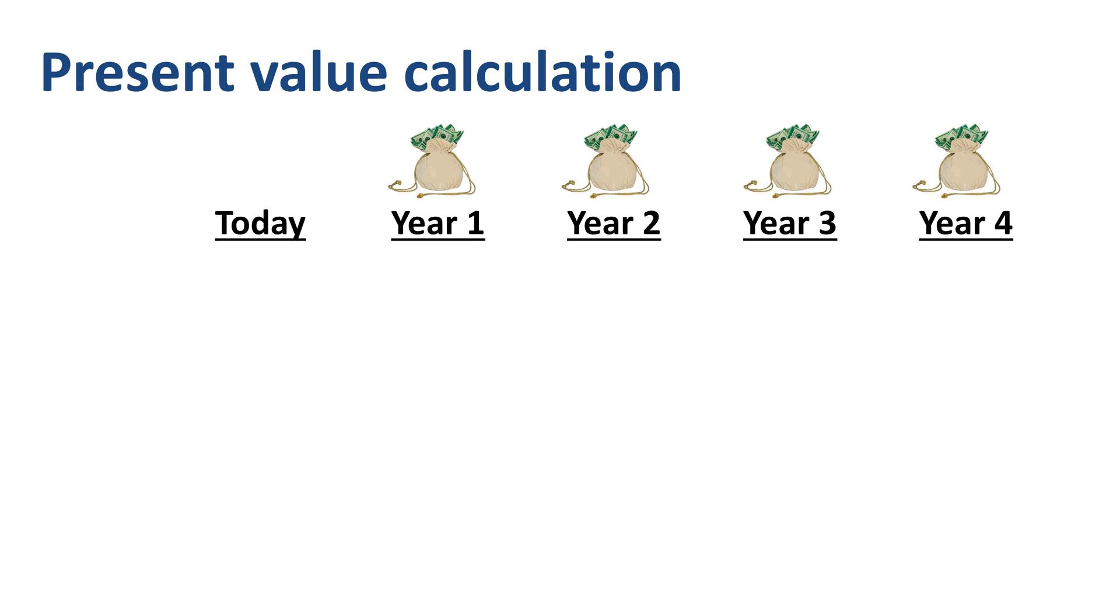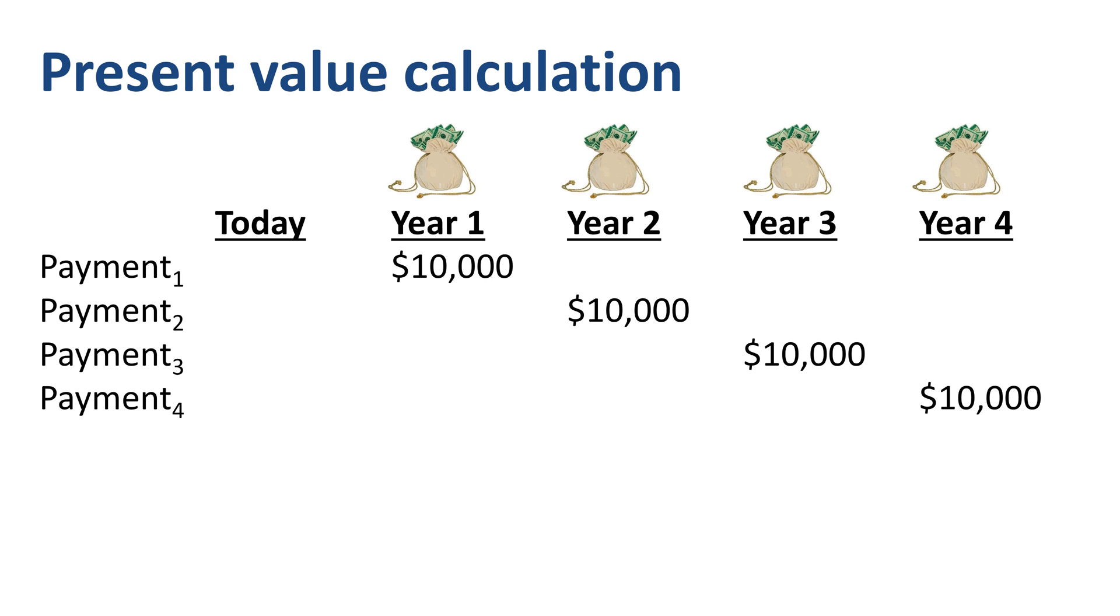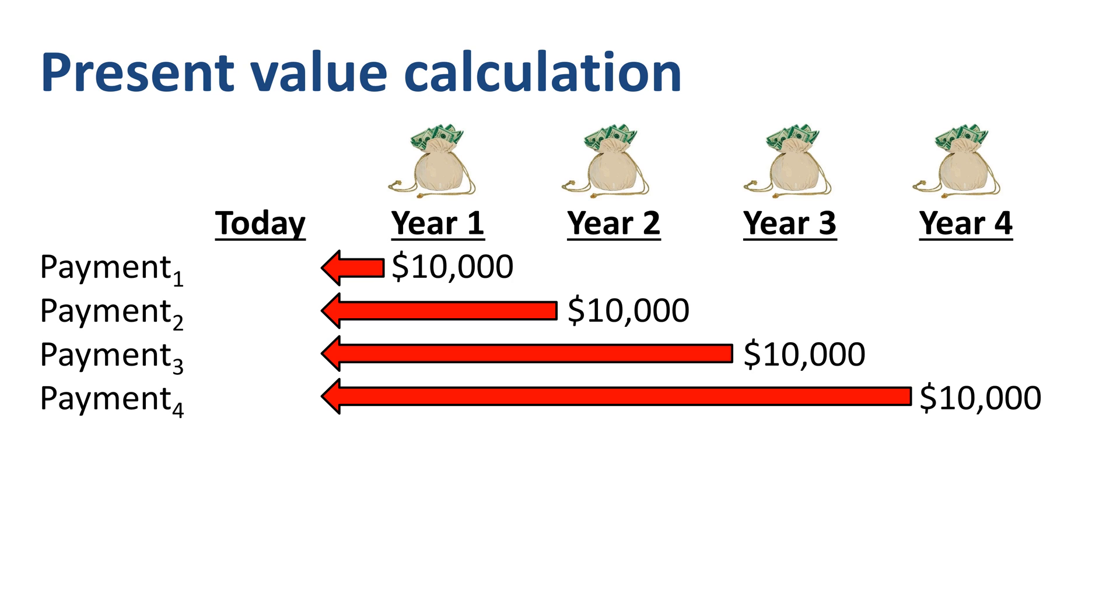You can calculate the present value of an annuity the same way you calculate any other present value. Take those future amounts of money, one by one, and translate them back to today's equivalent payment using the time value of money, the rate of return, or the interest rate, whichever applies.